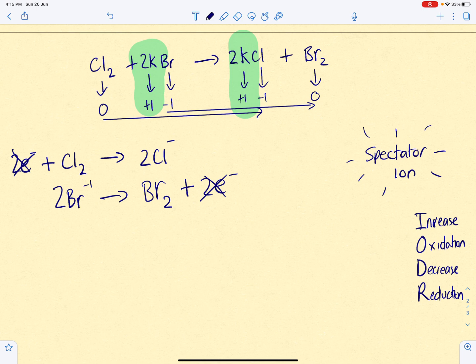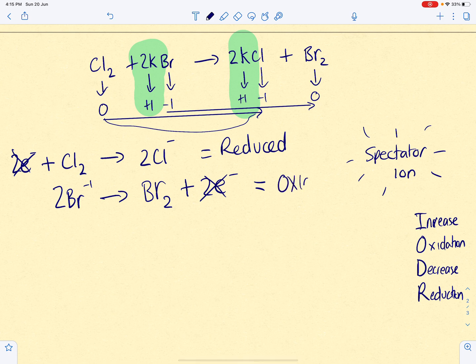So, chlorine has gone from zero to minus one. It's a decrease. Decrease is reduction. It has been reduced. Bromine has increased because it's gone from minus one to zero. So, it must have been oxidized.